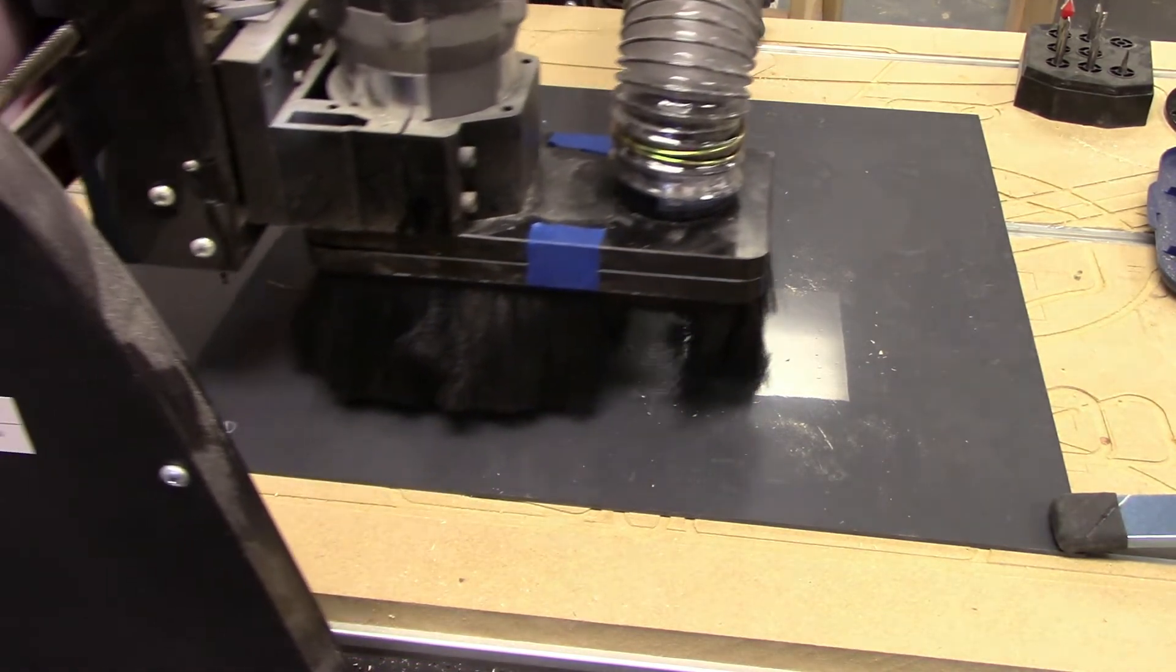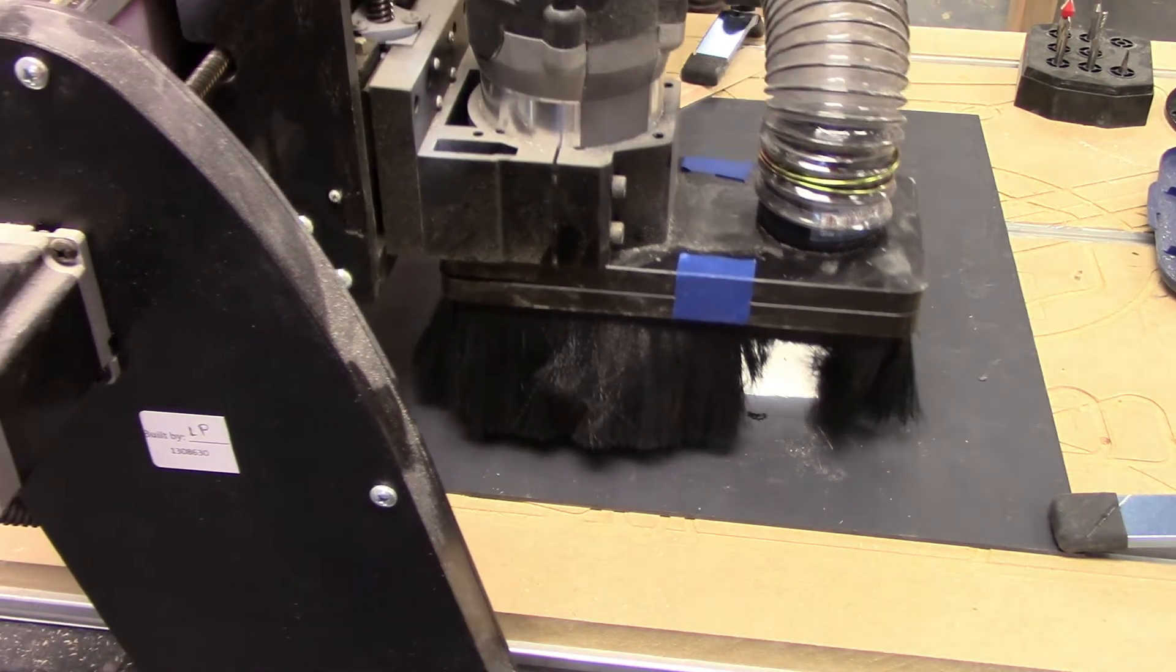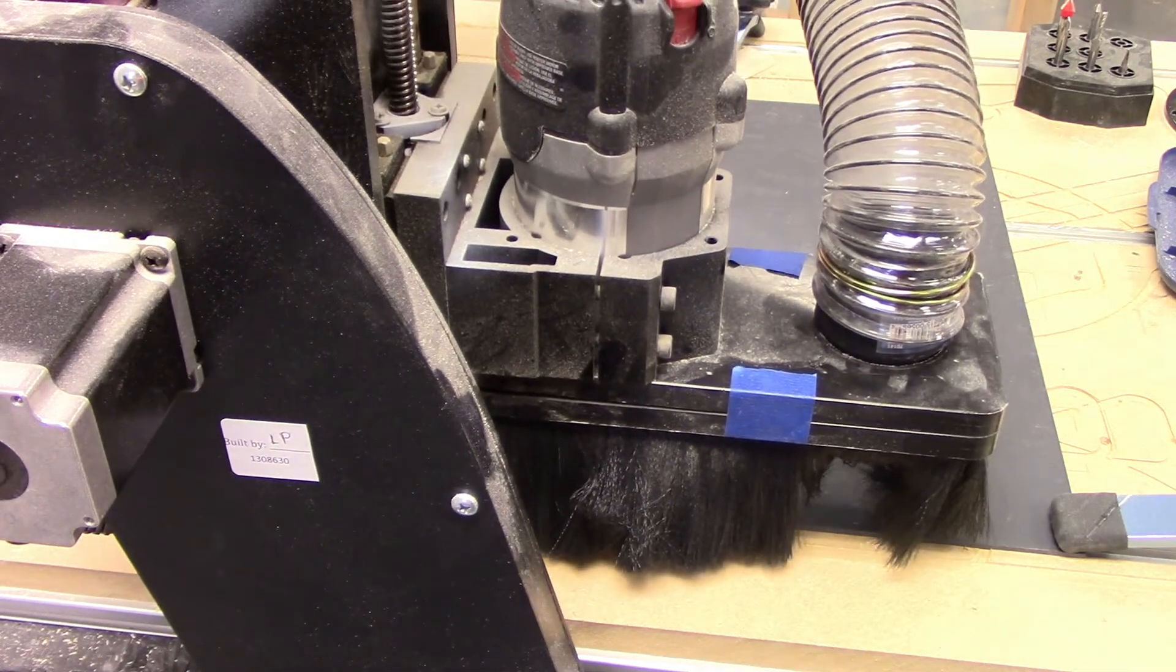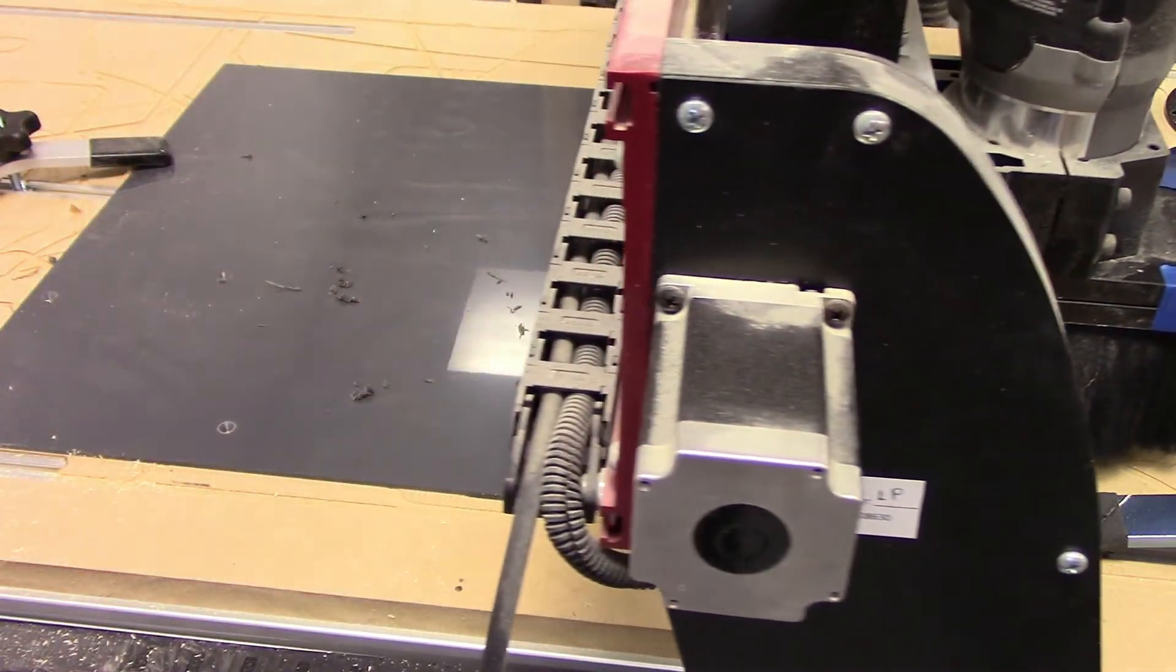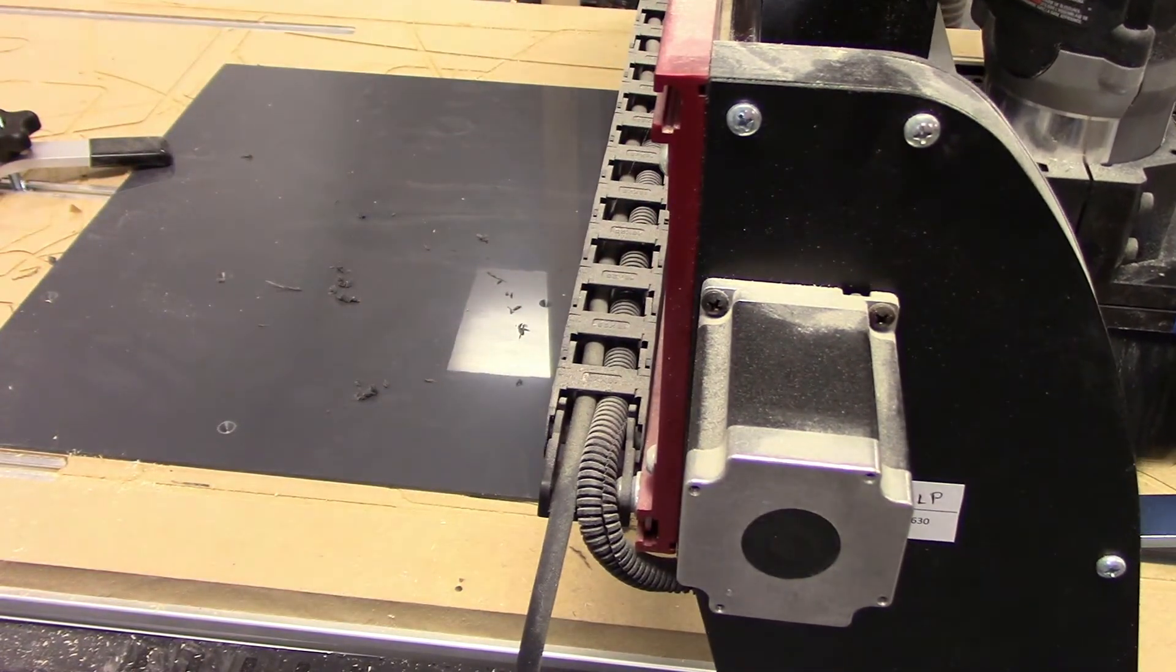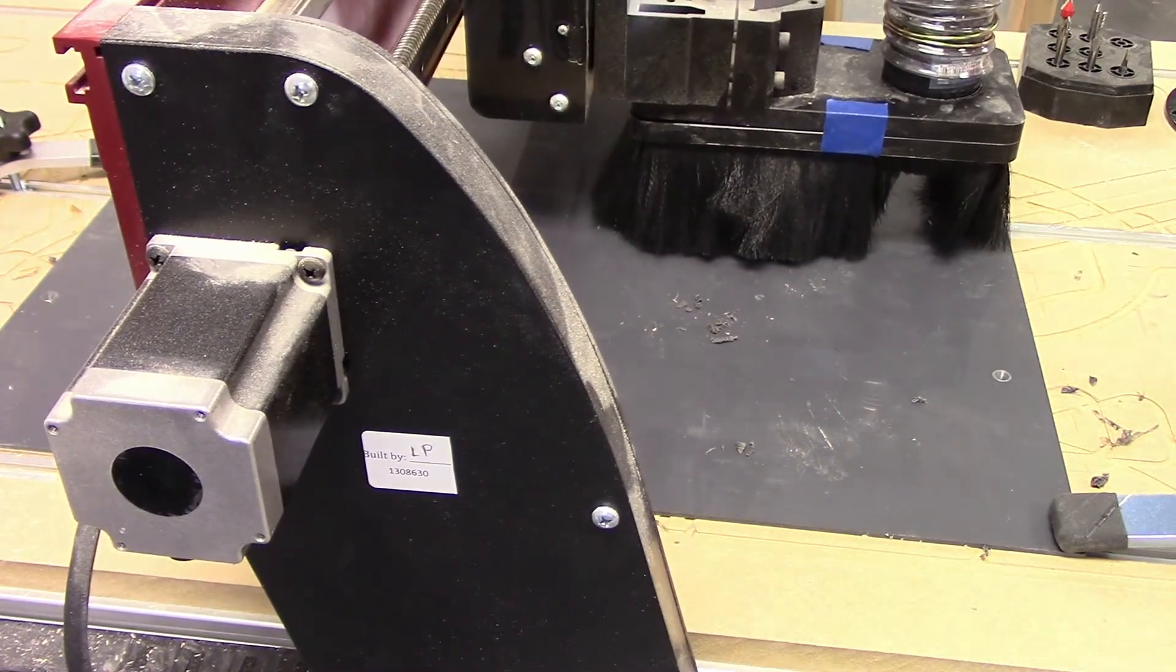This prevents the plastic sheet from bowing up in the middle affecting the depth of the cuts. The next cut utilizes the 90 degree V-bit to cut shallow 1/16 inch deep grooves near the tops of the bins. These grooves are finger pulls that will help the user pick up the bins.